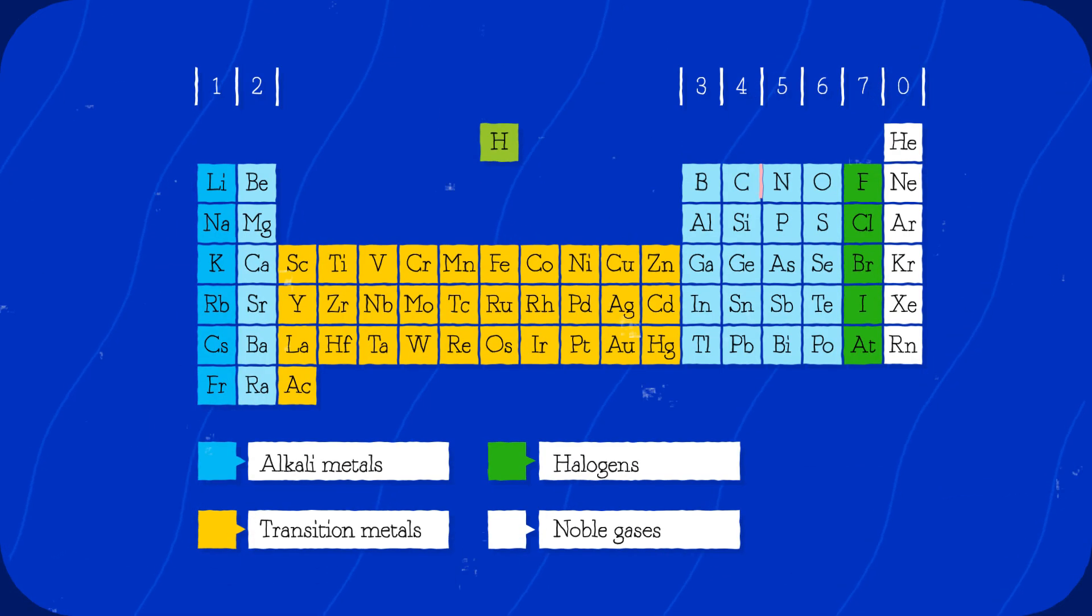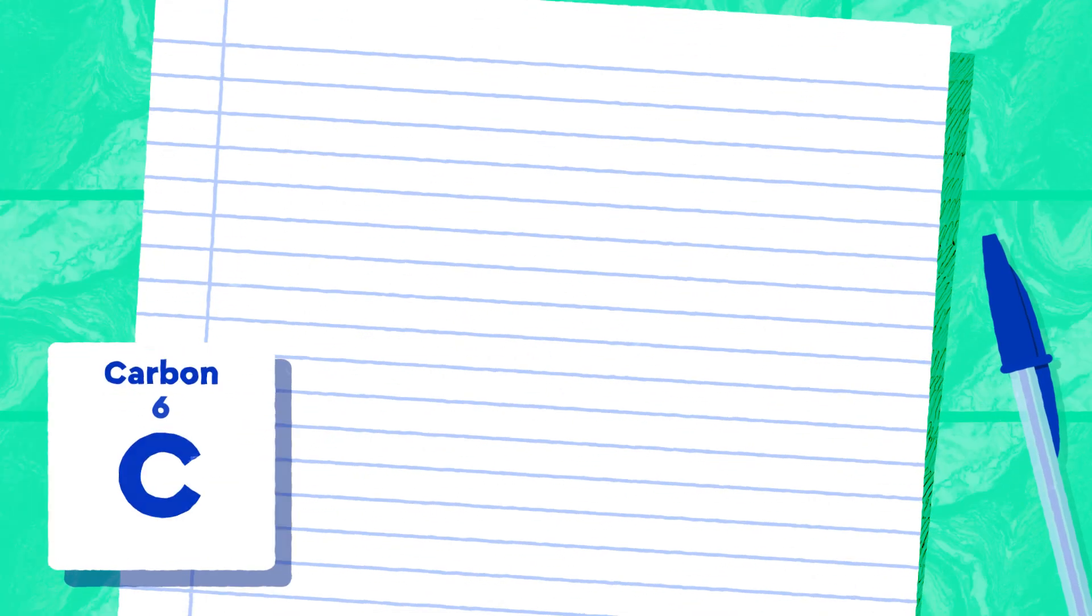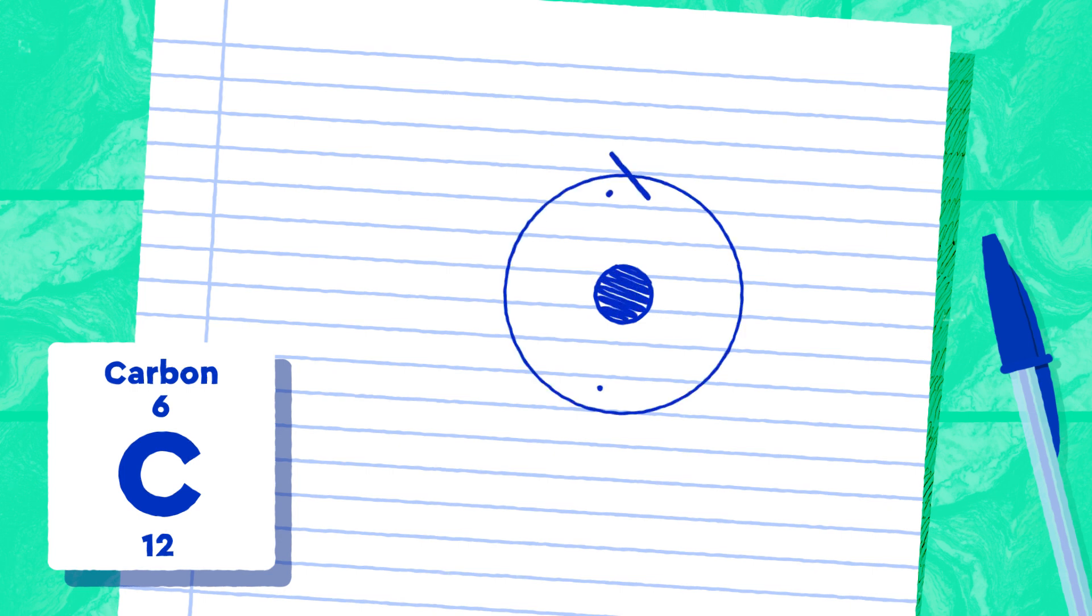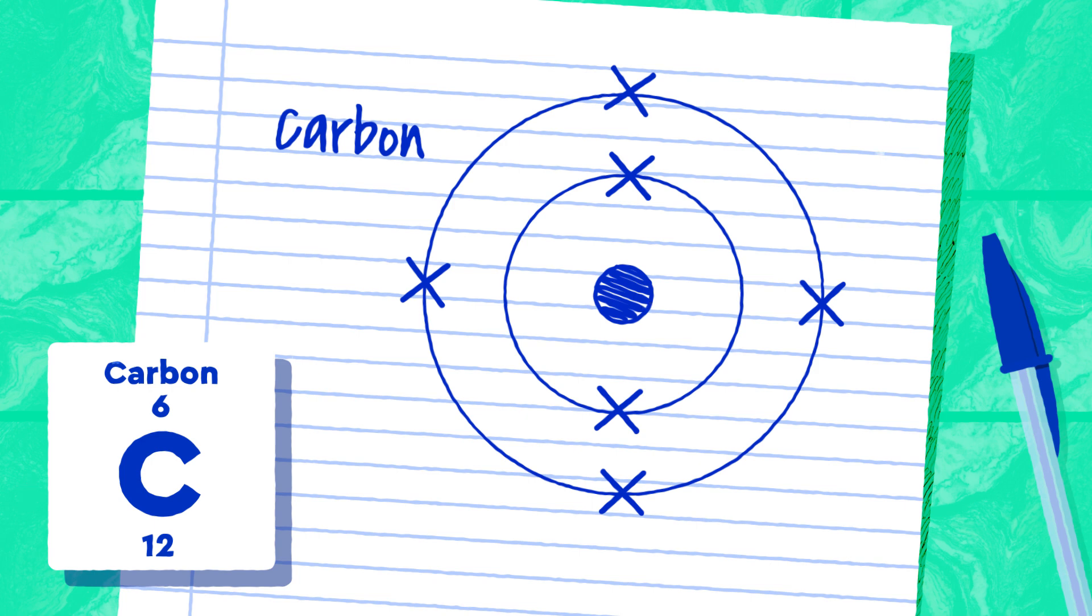We can now look at carbon, which has an atomic number of six. So we know that there's going to be six electrons. Again, we can start off with the same basic atom, a dot in the nucleus and a ring for the first shell. The first two electrons will fill the first shell, so now we need to add a second ring. We've got four electrons left to arrange for carbon and these will all fit in the second shell. So the electronic configuration for carbon is going to look like this.